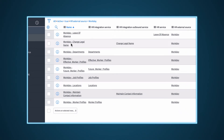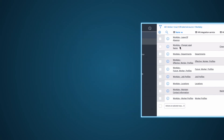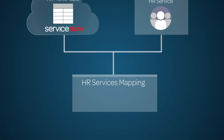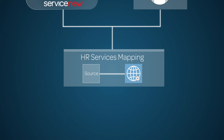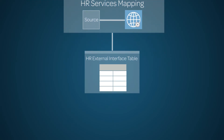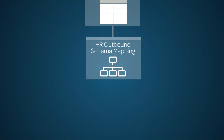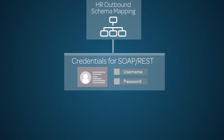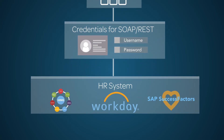Let's see how all of this works together in an outbound integration. A schedule or an event triggered in the ServiceNow platform starts the process of pushing data from the HR table or HR service. The HR Web Services transfer the data to the HR External Interface, which is another table in the ServiceNow platform. The HR Service Mapping configuration binds the source and web services. The HR Outbound Schema Mapping maps the data from the source tables to the fields in the target system, credentials provide access, and the data is incorporated into that system.